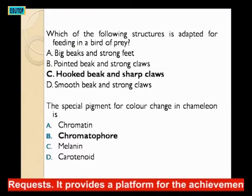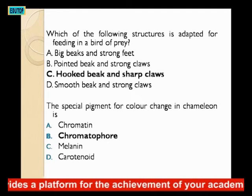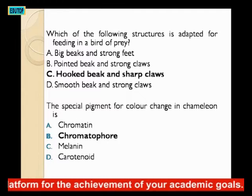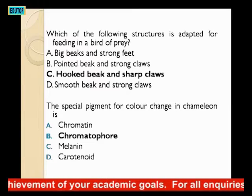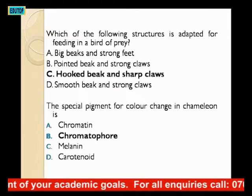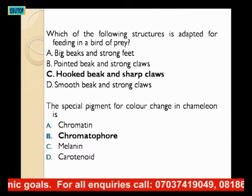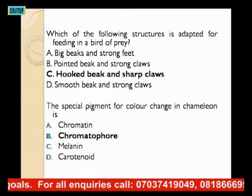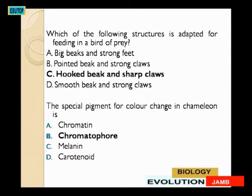Which of the following structures is adapted for feeding in a bird of prey? A: beaks and strong feet; B: pointed beak and strong claws; C: hooked beak and sharp claws; D: smooth beak and strong claws. The answer is C — hooked beak and sharp claws, which it uses to pierce the prey and then seize it with its sharp claws.